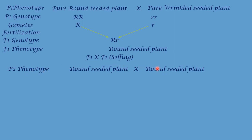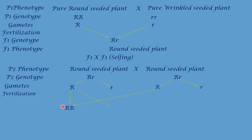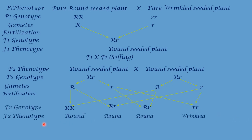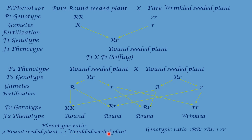P2 phenotype will be: round seeded pea plant crossed with round seeded pea plant. P2 genotypes are capital R small r and capital R small r. First parent forms gametes capital R and small r; second parent forms capital R and small r. During fertilization, gametes unite to form zygotes. The four offspring are: capital R capital R, capital R small r, capital R small r, and small r small r. The first three are round seeded pea plants, while the last is wrinkled seeded. So phenotypic ratio is 3 round seeded : 1 wrinkled seeded, and genotypic ratio is 1 RR : 2 Rr : 1 rr.